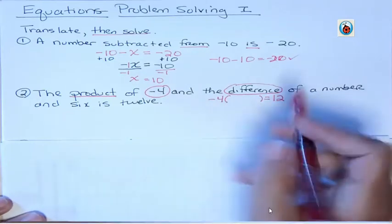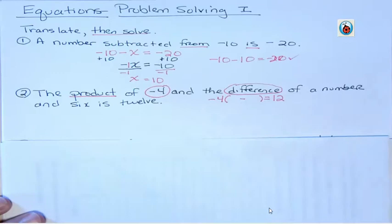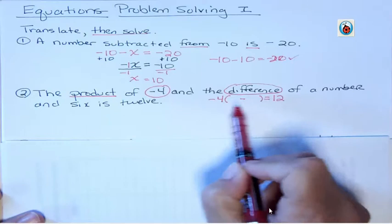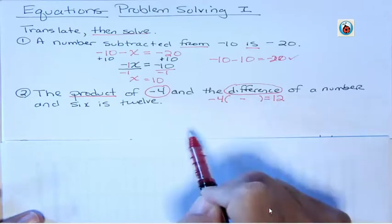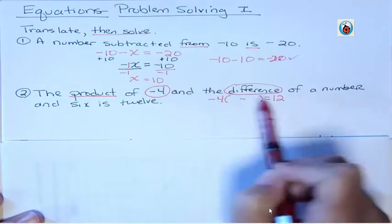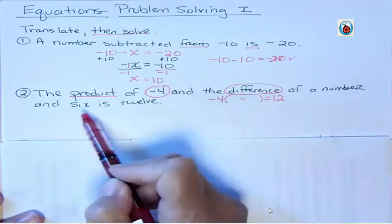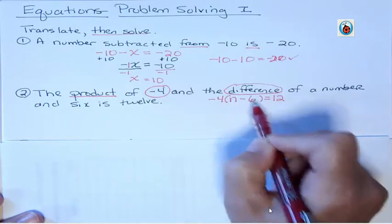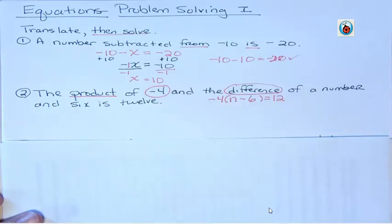Now I have to figure out what am I subtracting. That's what a difference means, right? So I've got a product, which means multiply. So negative 4 times this difference is 12. And the difference is a number and 6. So let's call our number n. So I have negative 4 being multiplied times that difference, which is a number and 6. And that equals 12 overall.